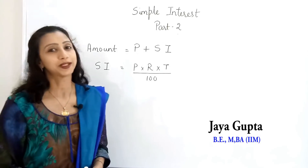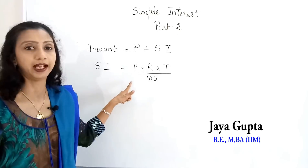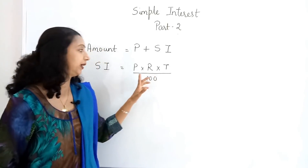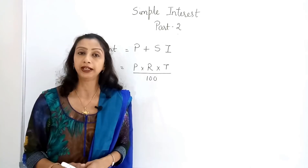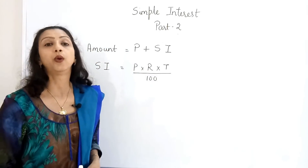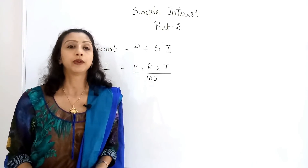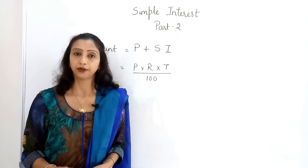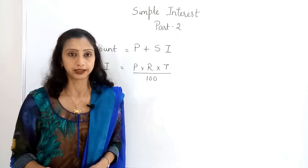Today we will be dealing with simple interest Part 2. Let's revise what we have already learnt in Part 1 — simple interest: how to calculate it. The formula is Principal into Rate of Interest into Time Period divided by 100. Remember, the time period is always in years. The rate of interest is always expressed in percentage — the amount received on every 100 rupees per year.